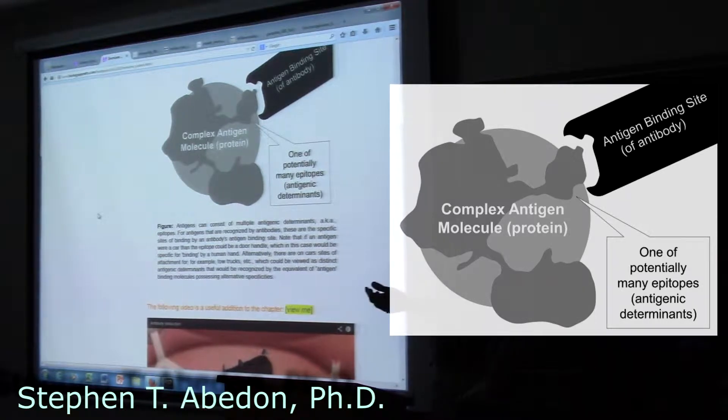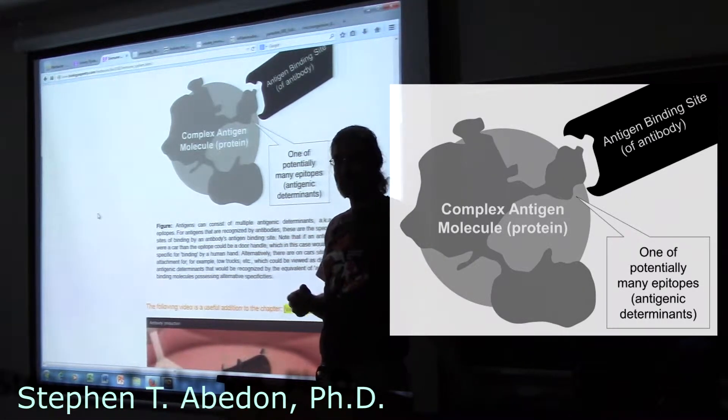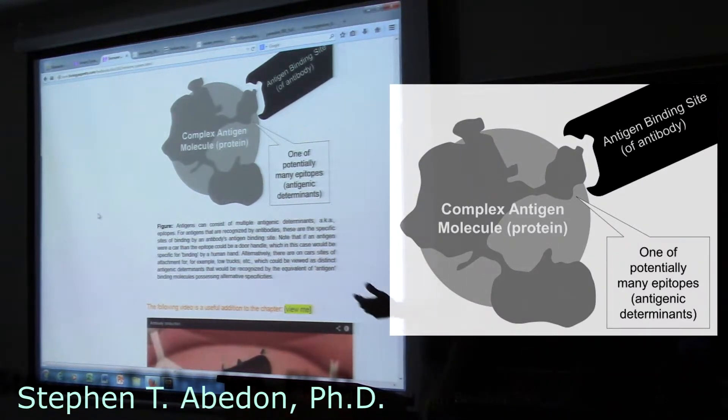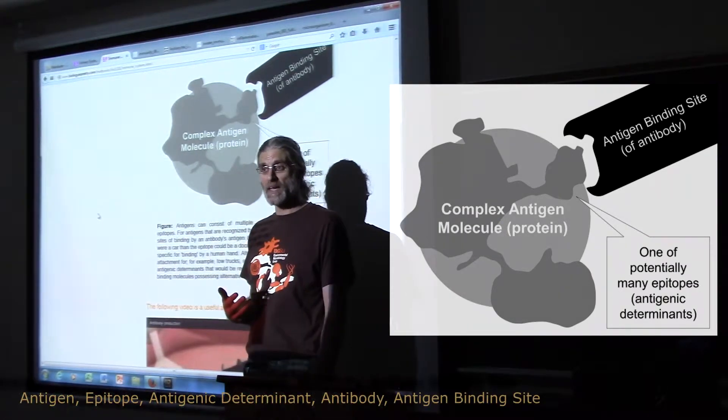The antibody, in turn, has an antigen binding site. The antigen binding site is the complement, in terms of its shape and its chemistry, to the site that it binds to on the antigen.